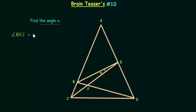BEF is angle x and we have to calculate the value of angle x. Angle BCF is equal to 20 degrees. Angle FCD is equal to 60 degrees.